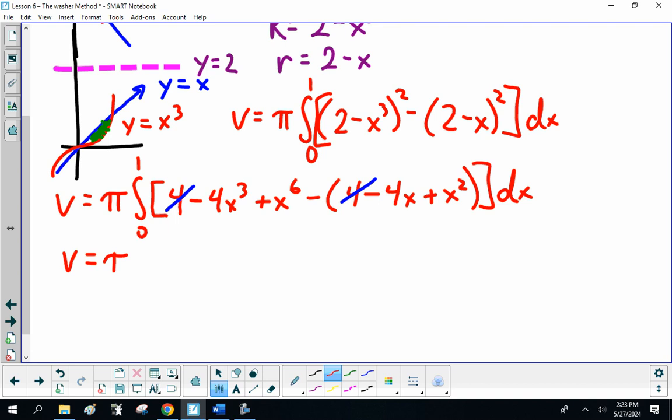So, volume is π times the integral from 0 to 1 of, now, I want to rewrite this in order because I'm weird like that, x⁶ - 4x³ + x².